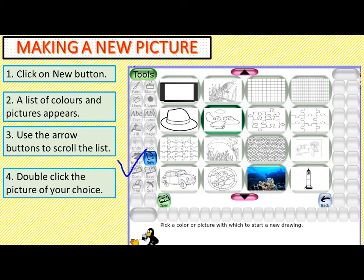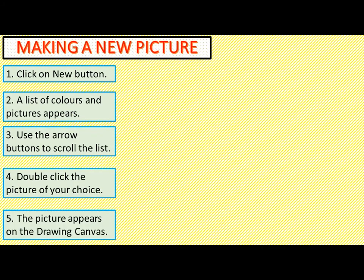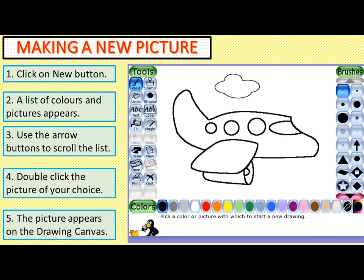When you click on the New button, a list of colors and pictures appears like this. Use the arrow button to scroll the list, then double-click the picture of your choice. For example, I will select this picture — you double-click on it, and the picture appears on the drawing canvas.